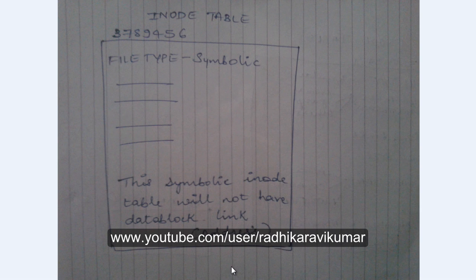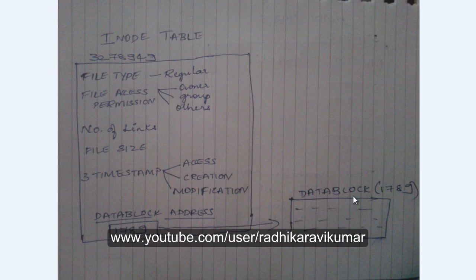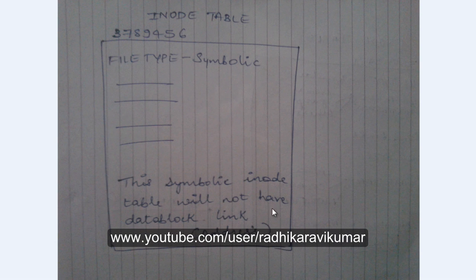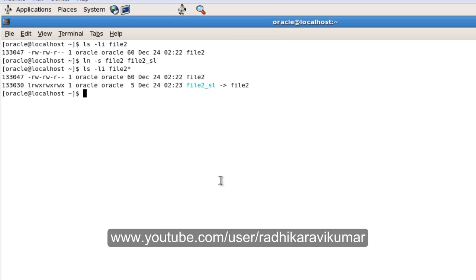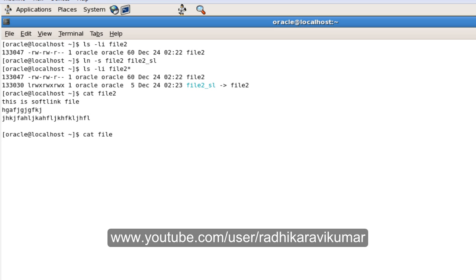The symbolic link connects to the data block indirectly, not directly. That's why when we deleted the main file of a hard link, the hard link file still retained the data. With a symbolic link, there is no direct link to the data block. To demonstrate: if I 'cat file2', you can see some content. Similarly, if I 'cat' the soft link file, it shows the same content.